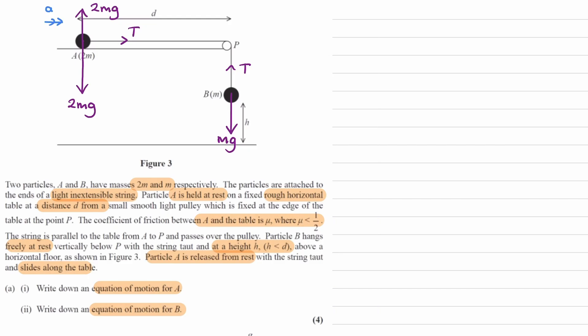Vertically, there is no resultant force, so the reaction force equals the weight of A, which is 2mg. There is also a friction force towards the left, which is μR. Since A is moving, the frictional force equals μR. We know R is equal to 2mg, so the frictional force is μ times 2mg, which we write as 2μmg.